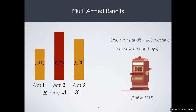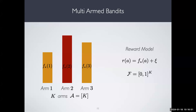This is called bandits because the scenario is inspired by slot machines, which are called one-arm bandits. A slot machine is a randomized machine that when you try it, it may give you money or not — similar to an arm that with some probability gives you a reward. This kind of scenario was first introduced by Robbins in 1952, and is a very long-standing model for these interactions.